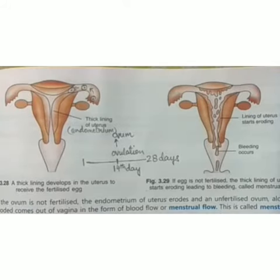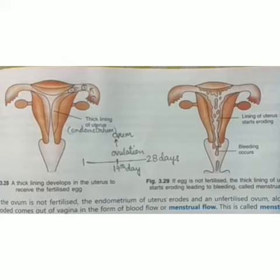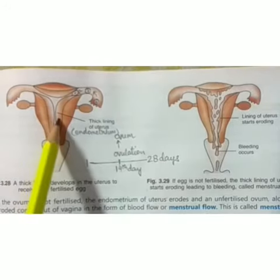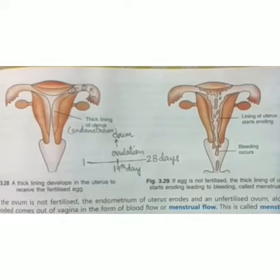Menstruation usually occurs 14 days after ovulation and usually lasts for about 3 to 5 days. When it gets over, the inner lining of the uterus starts building up again so that it may become ready to receive the next ovum in case it gets fertilized.